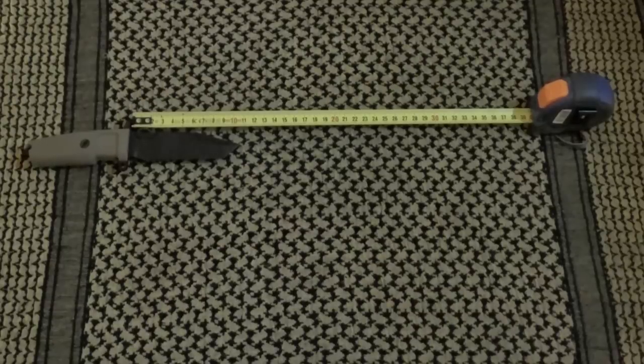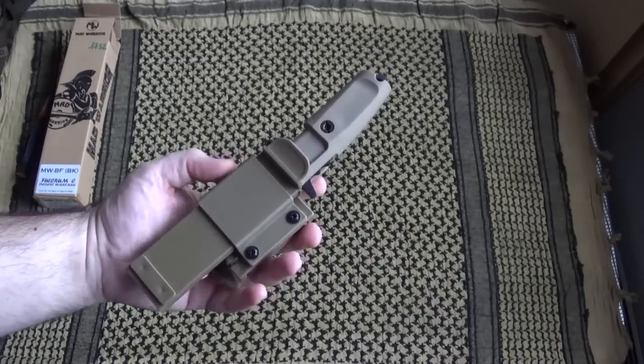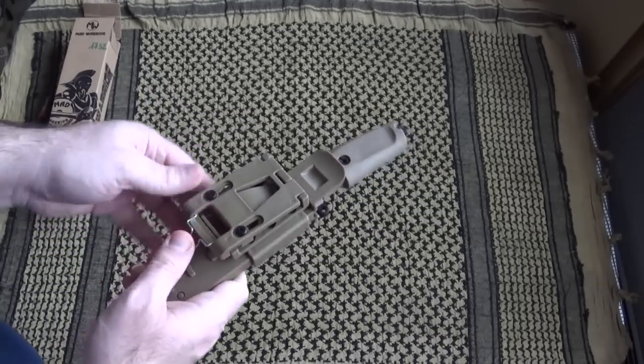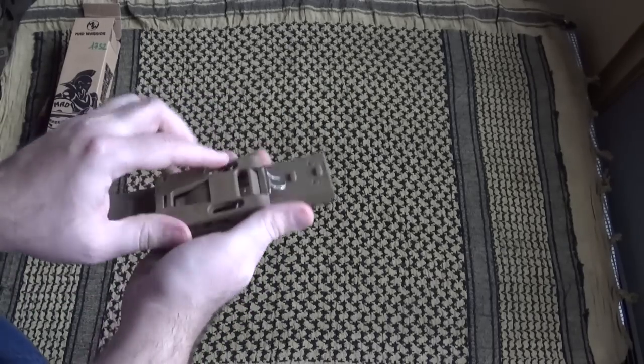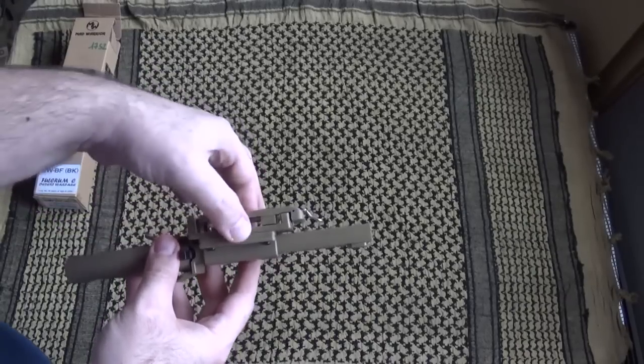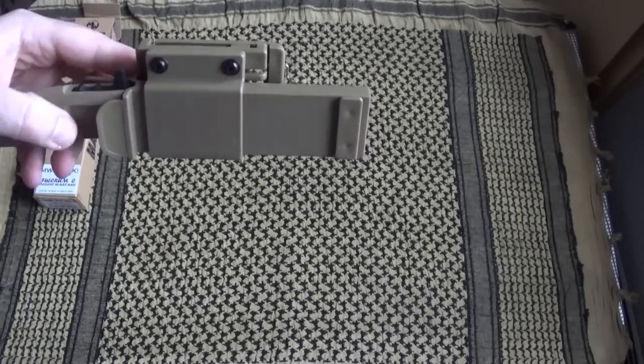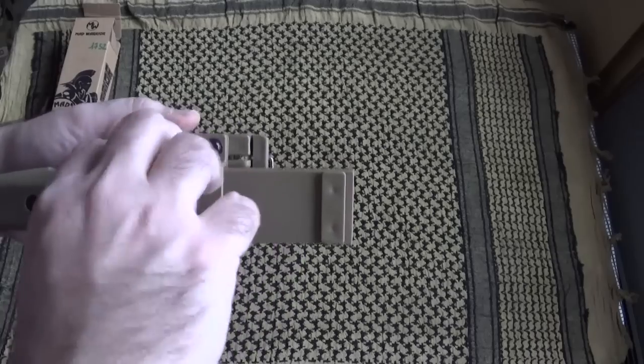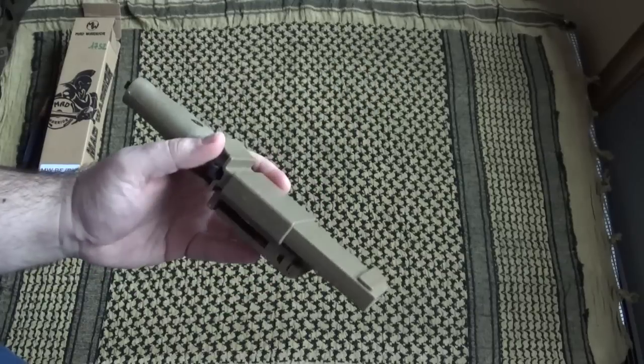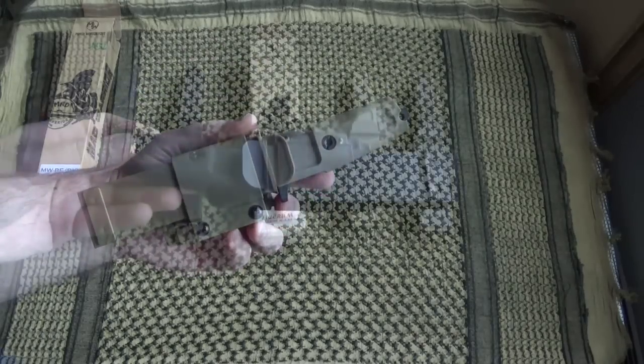Regarding compatibility with MOLLE webbing, as it is like this, no, it's not compatible. However, I think there's a way relatively easily by simply passing one or two MALICE clips here, depending on the thickness, to be able to attach it to your vest. You'll need to work on the inclination of the belt clip that's behind, but by tinkering without too many tools, I think you should be able to adapt it to a vest.